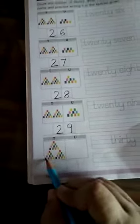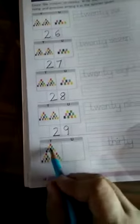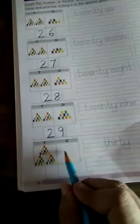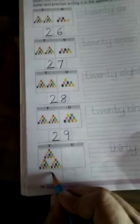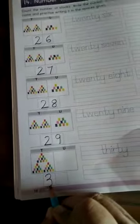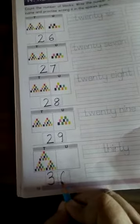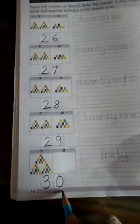Now see here, this is 3 tens. How many tens? 3 tens and there is nothing in the unit place. So 1 ten, 2 tens, and 3 tens. 3 tens and 0 units means 30. 3 tens means 30.